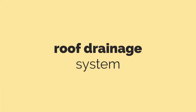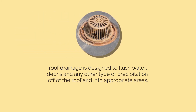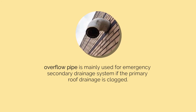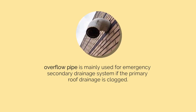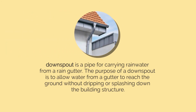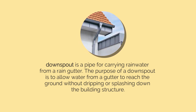Let's proceed to roof drainage. The roof drainage is designed to flush water, debris, and precipitation off the roof into appropriate areas. A drain pipe carries rainwater from the roof of a building to the ground. An overflow pipe is mainly used for an emergency secondary drainage system if the primary roof drainage is clogged. A downspout is a pipe for carrying rainwater from a rain gutter — its purpose is to allow water from a gutter to reach the ground without dripping or splashing down the building structure.